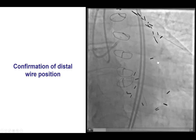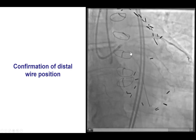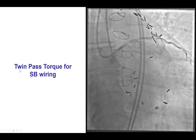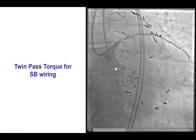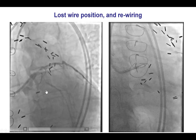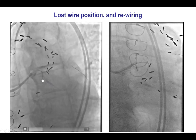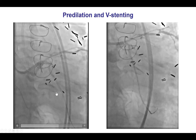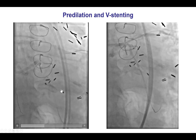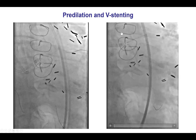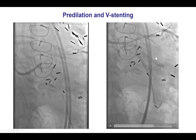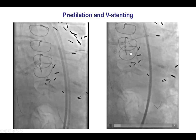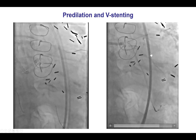The next step was to preserve the obtuse marginal branch while maintaining access to the circumflex using a dual-lumen microcatheter. We did try a twin-pass torque but had difficulty entering the obtuse marginal branch, and unfortunately the wire position was lost. We had to restart the procedure from scratch and re-wire, and eventually after multiple attempts we were able to advance the guidewire into the distal vessel. Due to concerns about contrast and radiation, we decided not to attempt the obtuse marginal branch and instead proceeded with stenting the circumflex. Retrospectively, we should have probably tried to cross into the obtuse marginal a little bit longer.